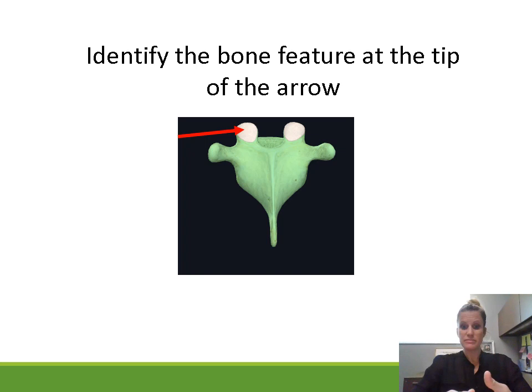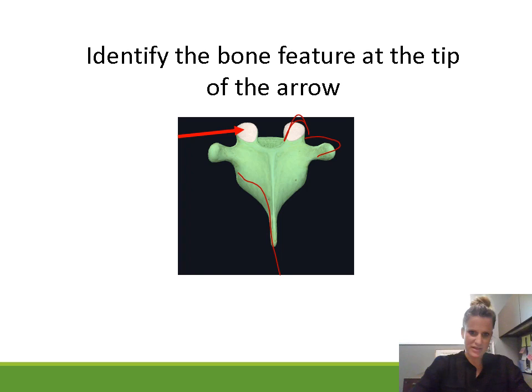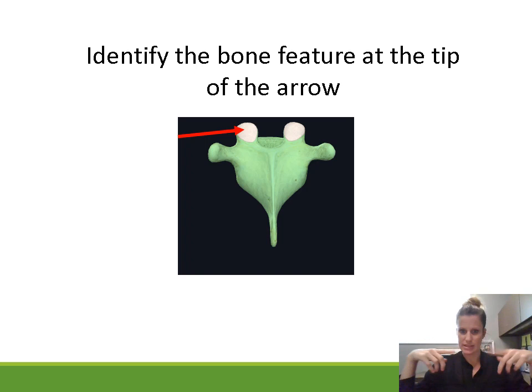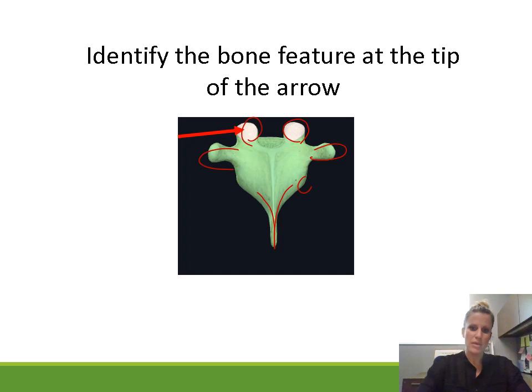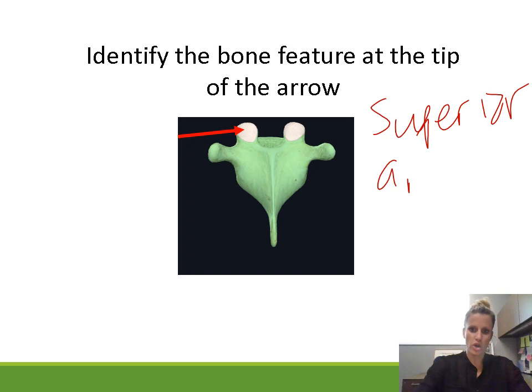Identify the bone feature. We're looking at a thoracic vertebra — I know because it looks like a giraffe with horns, ears, and a long snout. All vertebrae have the same processes: the spinous process going toward the back, transverse processes at the sides, and articular processes on the top and bottom. This is pointing to the articular processes on top — referred to as the superior articular processes.